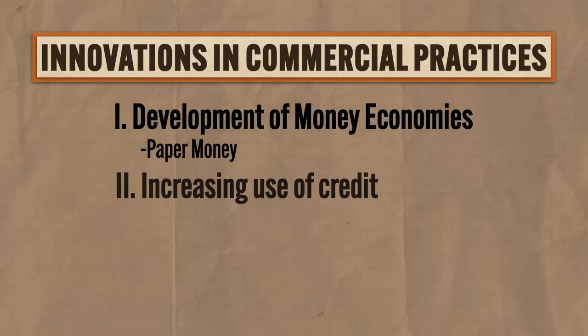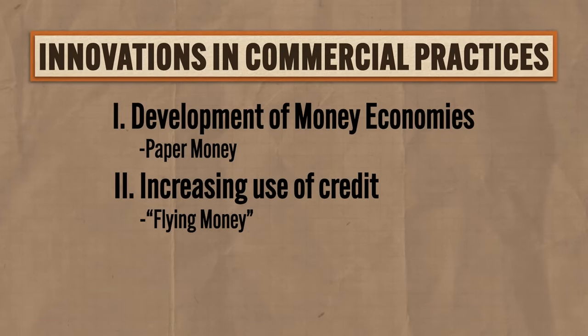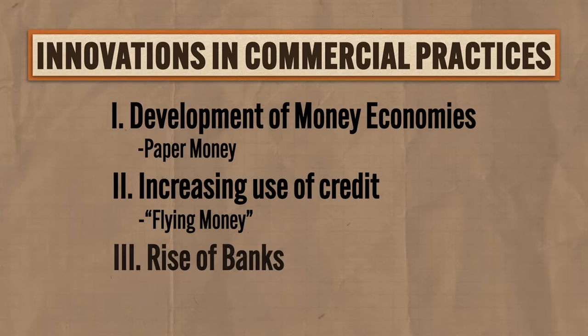Second, related to this was the increasing use of credit to facilitate trade. Instead of paper money, merchants could secure pieces of paper from merchant families in one region and then go to another region and exchange that paper for coins. The Chinese called this arrangement 'flying money,' and its increasing use led to the expansion of trade and networks of exchange. Third, to facilitate all these exchanges, banks became increasingly necessary to keep the flow of trade humming along.